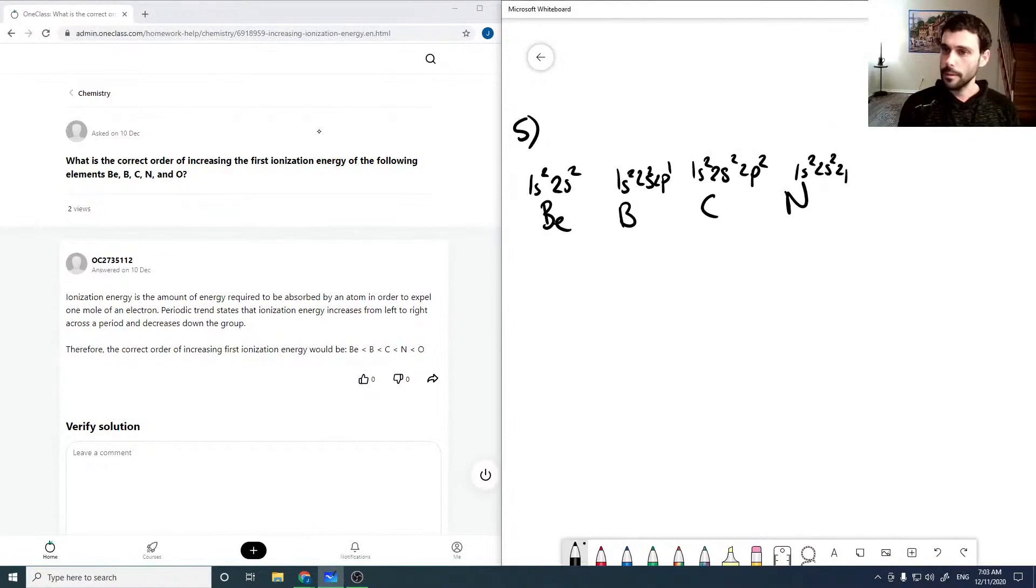Nitrogen is 1s² 2s² 2p³, and oxygen is 1s² 2s² 2p⁴. Our first ionization energy is going to be kind of a mix of things here.